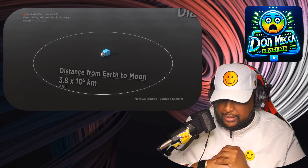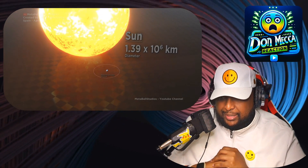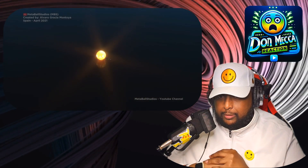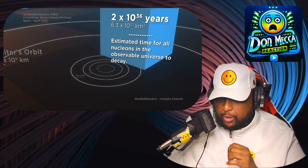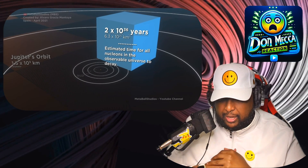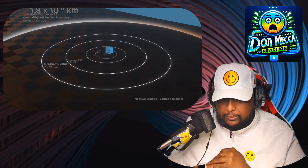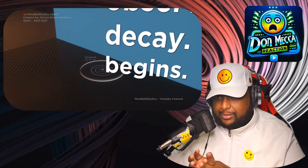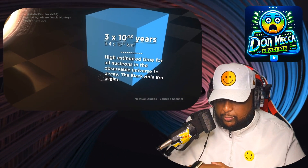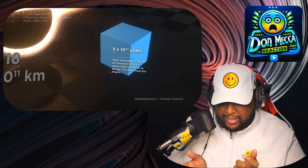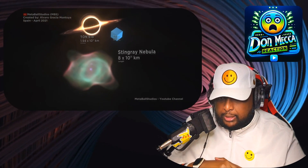The Earth-Moon distance reference. The sun — look how small we look. Mercury's orbit. Estimated time for all nucleons in the observable universe to decay. Crazy times coming up. High estimated time for all nucleons in the observable universe to decay — the black hole era begins. Okay. Stingray Nebula.